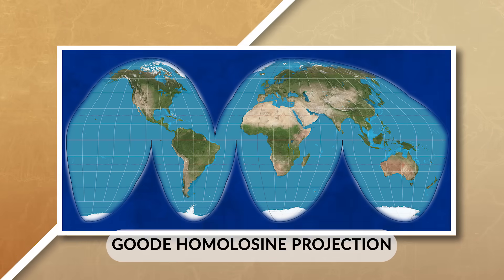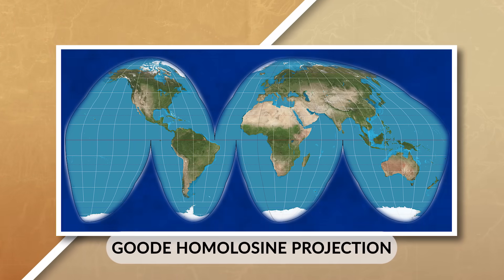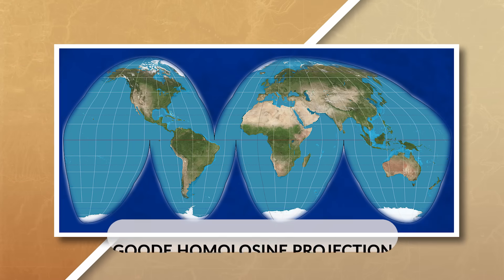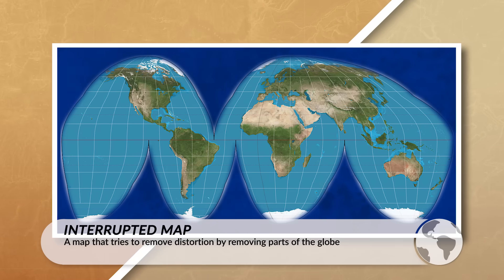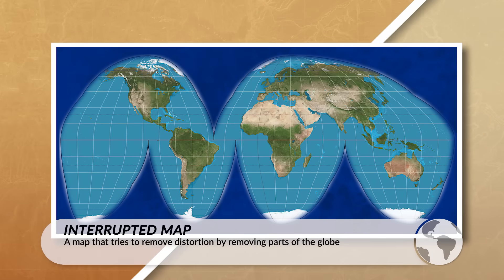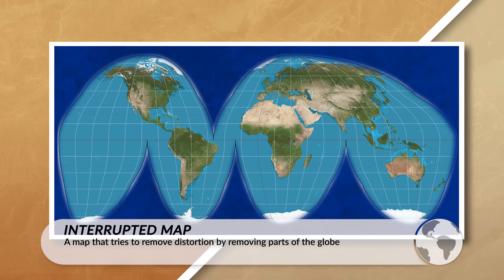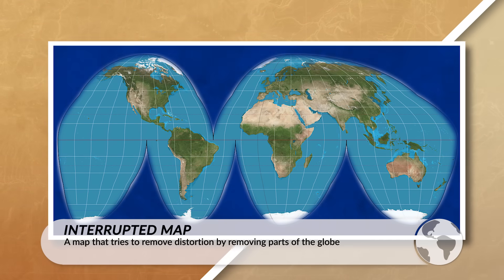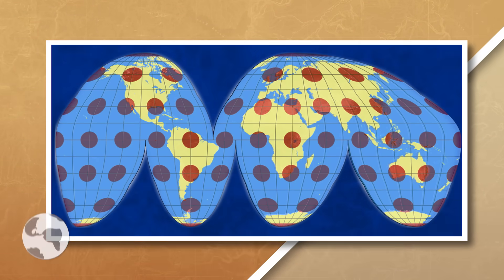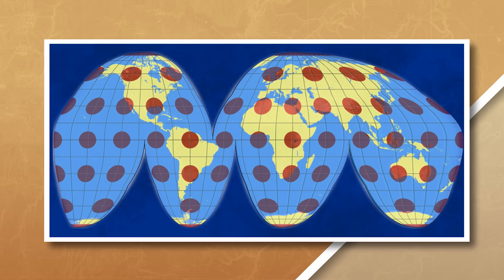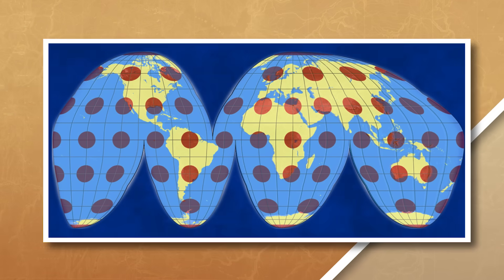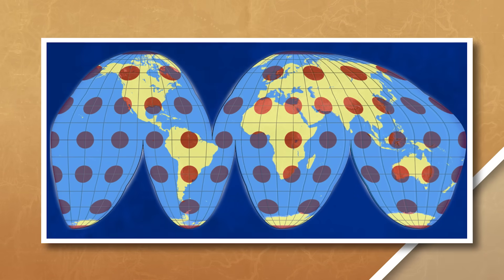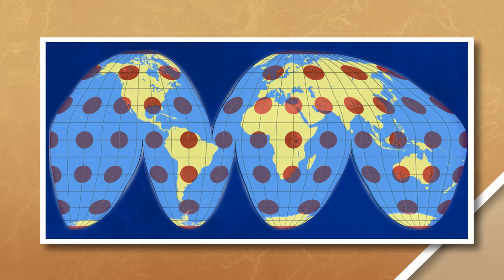Okay, so if the Mercator map projection is flawed, then what map projection should we use? Well, we could use the Goode's Homolosine projection, which is an interrupted map. This map projection is an equal area projection — it excels at showing the true size and shape of the Earth's landmasses, but has distortion with distance and distortion near the edges of the map. This map is also not that helpful for direction since it is an interrupted map.